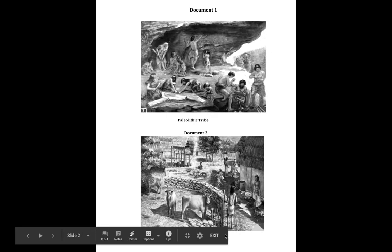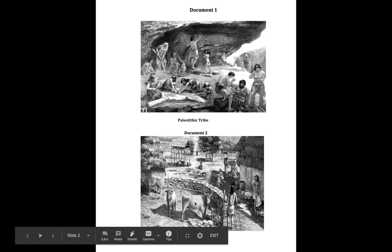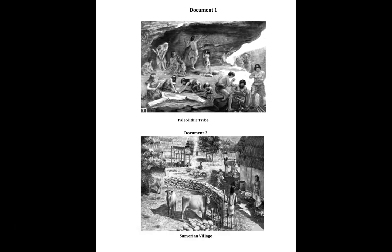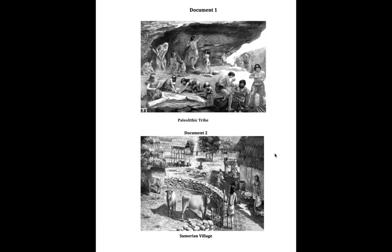Document two is a Sumerian village. I know that Sumer was a location in Mesopotamia. Even without knowing that, I can see that these homes are so much bigger than ones from Paleolithic drawings — these are permanent homes. They've got cows and some other animals. What do they use cows for? Milk, food, even clothing. This is definitely a Neolithic scene.